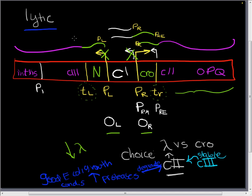When we've got favorable conditions for E. coli growth, this lambda phage can make lots and lots of copies of itself and go infect lots of other healthy E. coli cells.